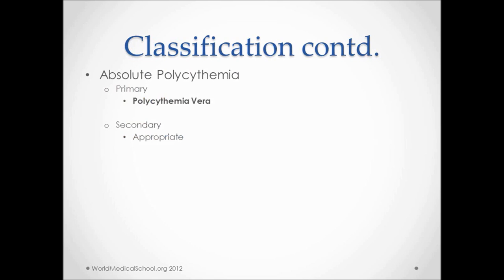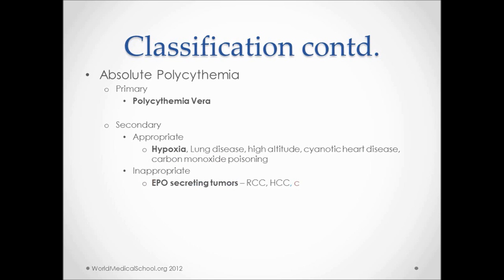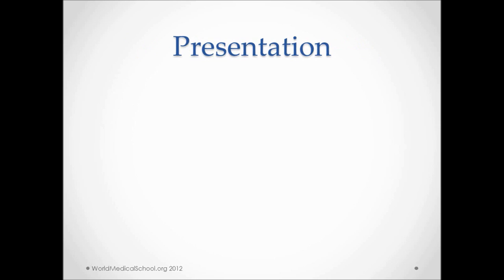Secondary polycythemia can be appropriate or inappropriate. Appropriate is due to any conditions that lead to hypoxic states or states of low oxygen, like lung diseases, high altitude, cyanotic heart diseases, and carbon monoxide poisoning. Inappropriate polycythemia is due to inappropriately high secretions of erythropoietin from renal cell carcinoma or hepatocellular carcinoma or it could also be cerebellar hemangioblastoma.